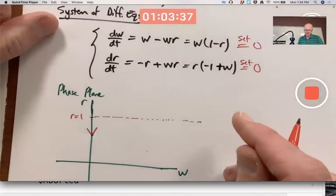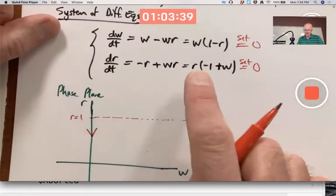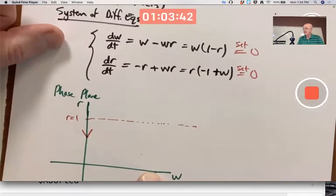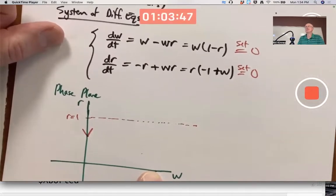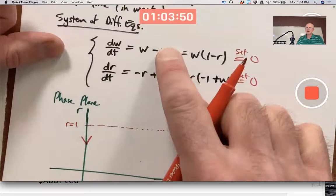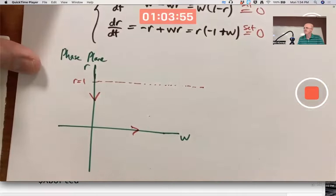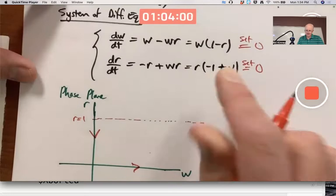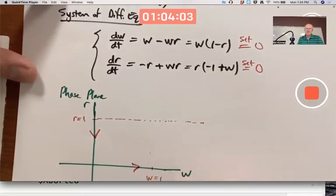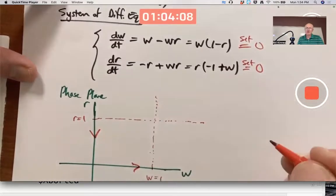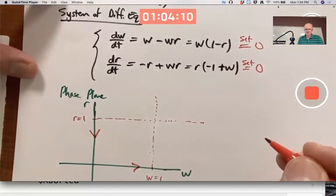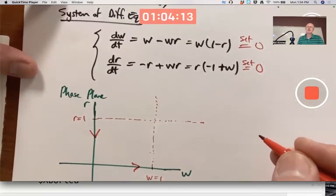Now think about the robins. dR/dt is zero, first of all, when R is zero. When you're on the W-axis. When there's no robins to start with, there's never any robins. And the worm population grows exponentially. Make an arrow pointing to the right. Also, dR/dt is zero when W is one. Make a vertical line. dR/dt is zero when W is one.